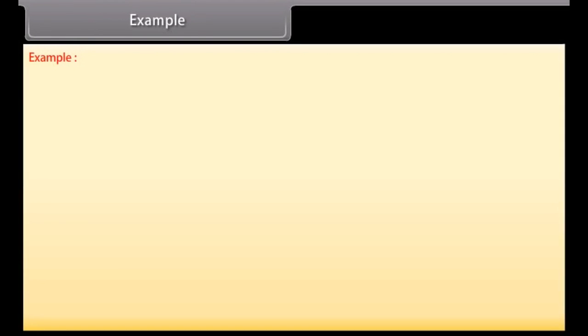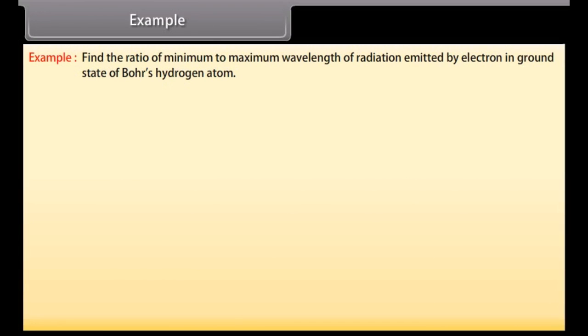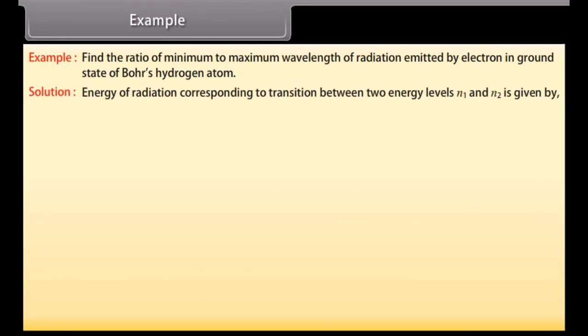Example. Let's take an example of Bohr model of the hydrogen atom. Let's see the solution. Find the ratio of minimum to maximum wavelength of radiation emitted by electron in ground state of Bohr's hydrogen atom. Energy of radiation corresponding to transition between two energy levels N1 and N2 is given by 13.6 multiplied by 1 upon N1 square minus 1 upon N2 square electrovolt. E is minimum when N1 is equal to one and N2 is equal to two. E minimum is equal to 13.6 into 3 upon 4 electrovolt.